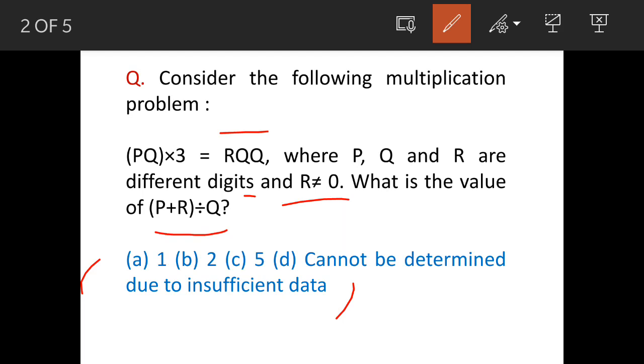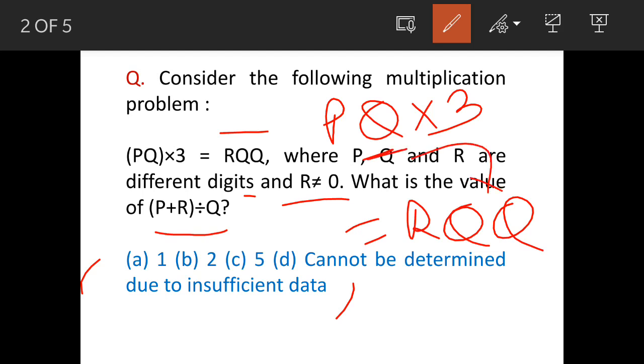Now before we see the solution, we will see the question once again. There is a number PQ - this is a two digit number. It is multiplied by 3. The result is RQQ. That means the result must have this digit appearing twice at unit place and tenth place. So this is the meaning of this multiplication.